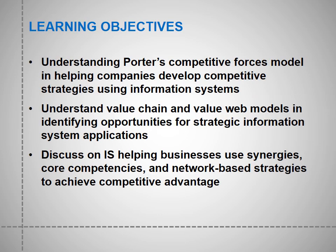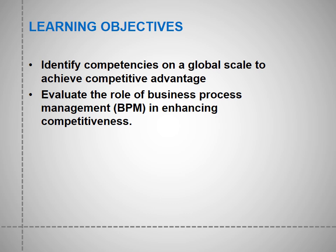Our learning objectives will give us a basic understanding of Porter's Competitive Forces Model. We also understand the value chain and the value web models in identifying opportunities for strategic information system applications. We also discuss how IS helps businesses in the use of synergies, core competencies, and network-based strategies. We identify competitive competencies on a global scale and evaluate the role of business process management in enhancing competitiveness.